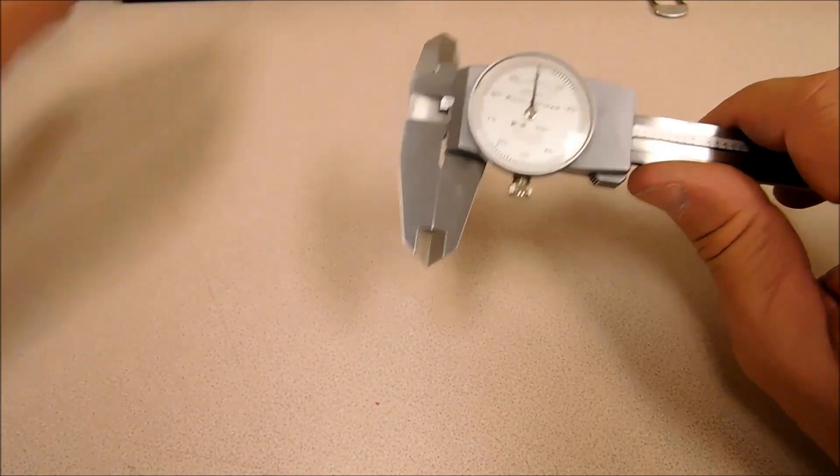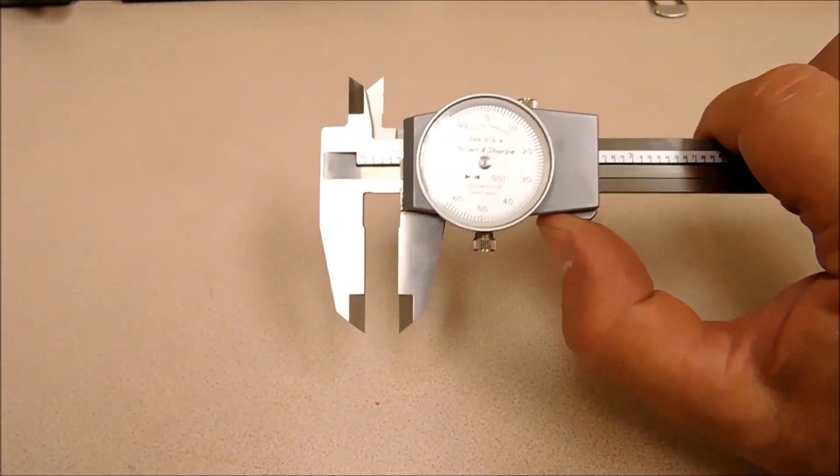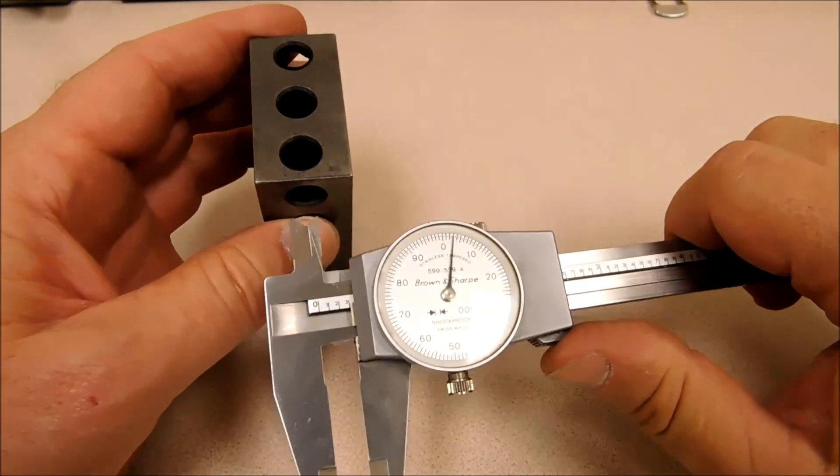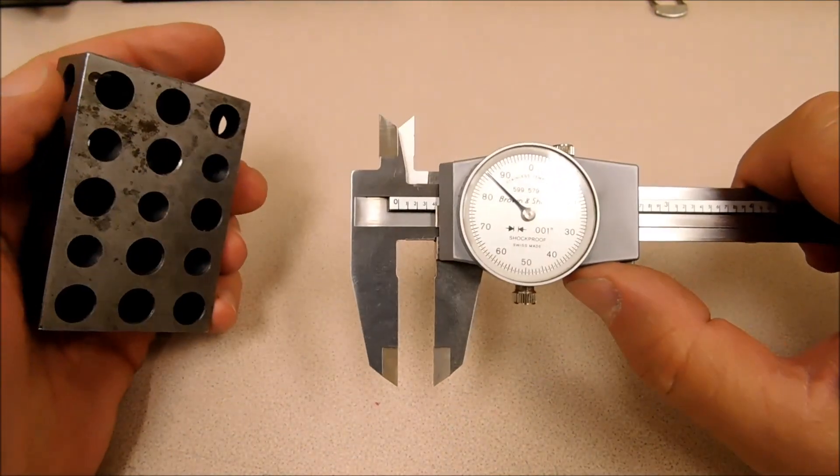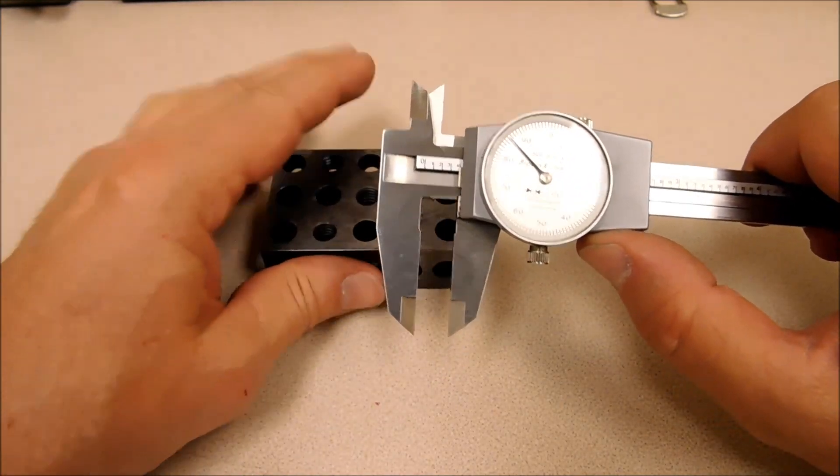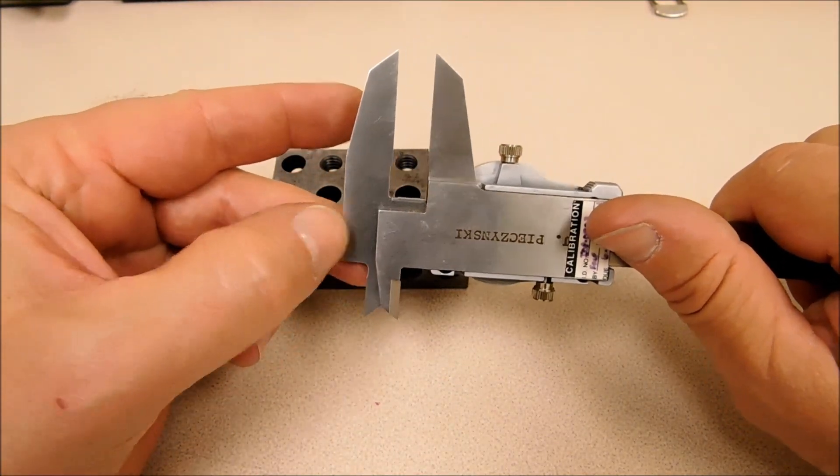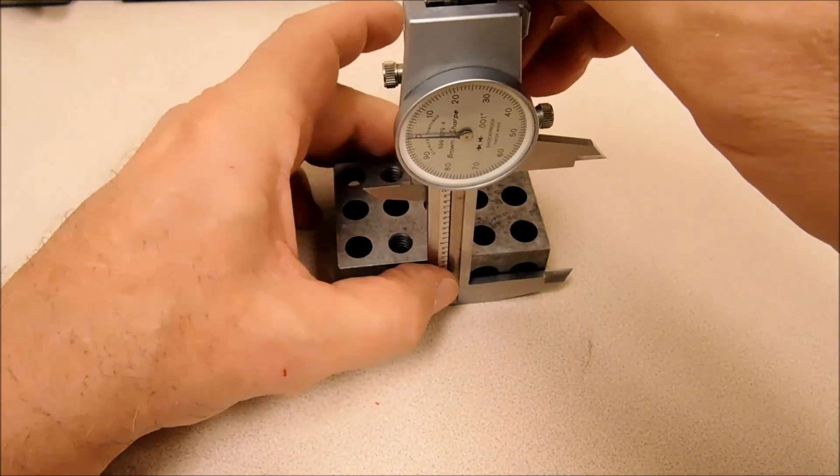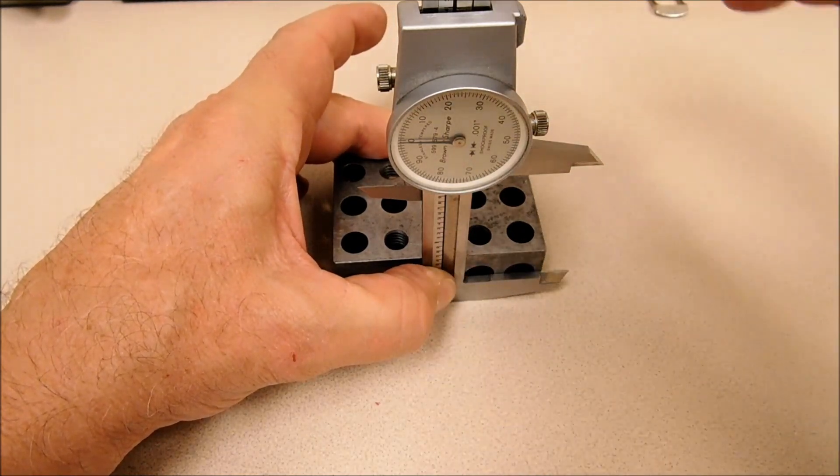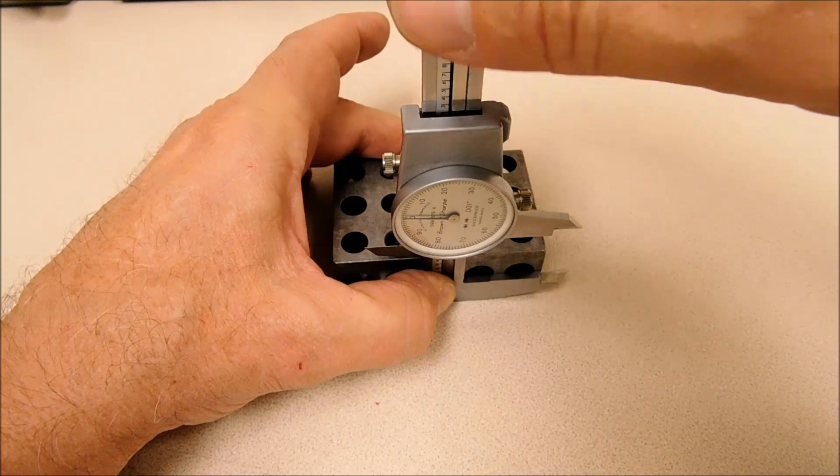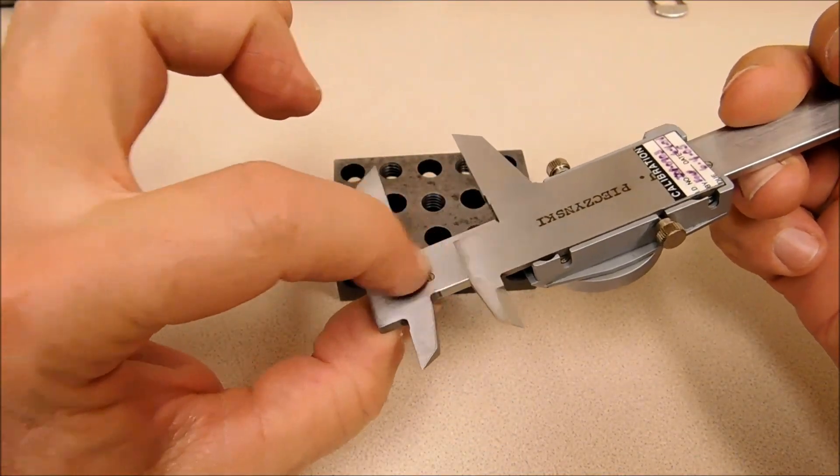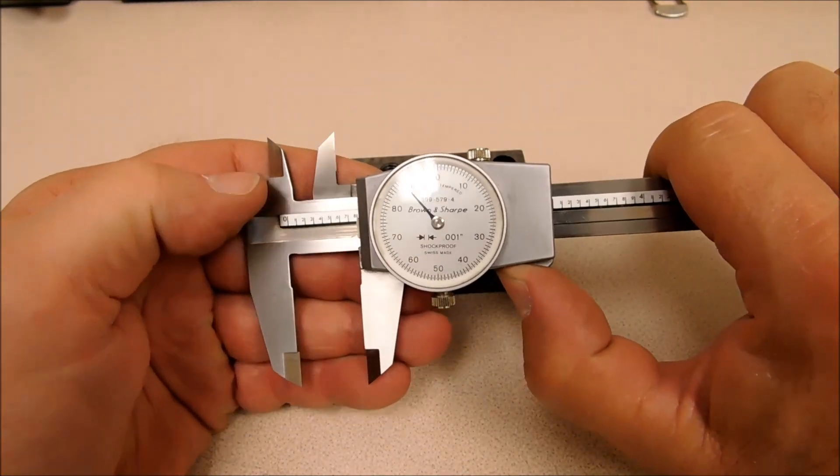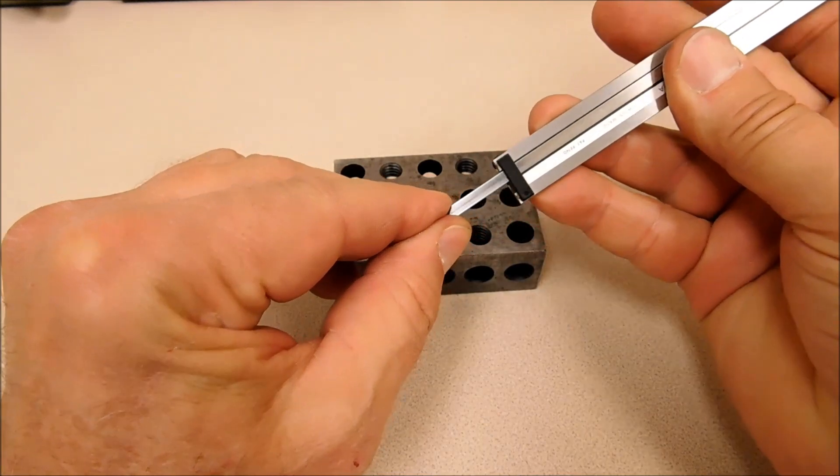Standard caliper measures outside, measures inside. What else? Did you know that you can use this back step on your caliper as a height gauge? Take the caliper, press it against the part, make sure it's against, move the whole thing down. There you go - height gauge built-in. That's three: inside, outside, height gauge.